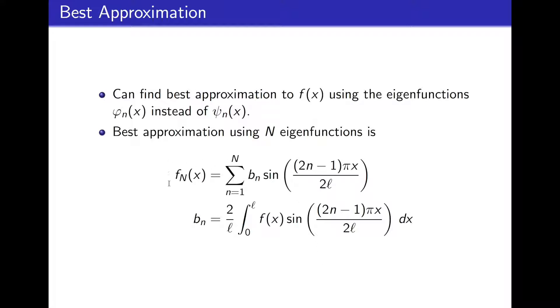And so we see that the best approximation fn will be a linear combination of all of the eigenfunctions, this sine of (2n minus 1) pi x over 2L. And each of these coefficients are determined by an inner product of f with each eigenfunction.